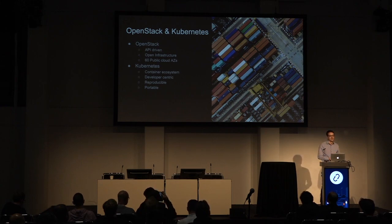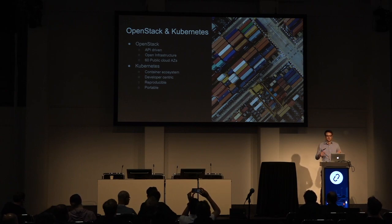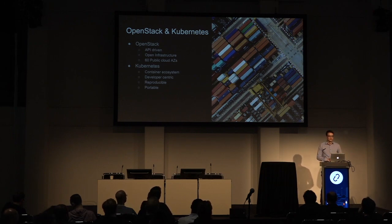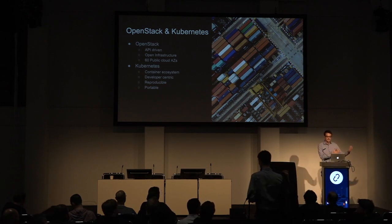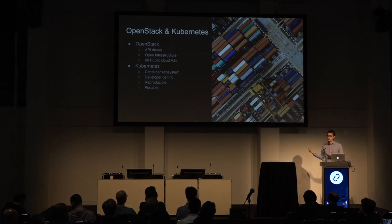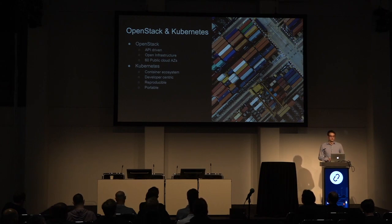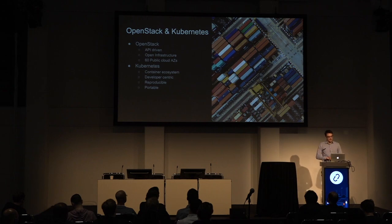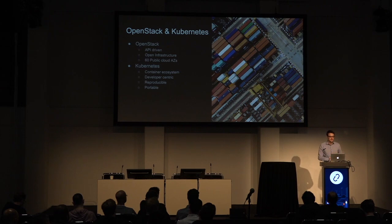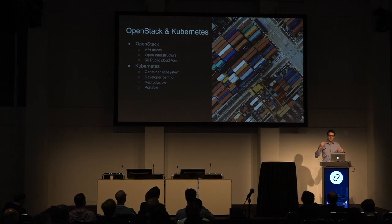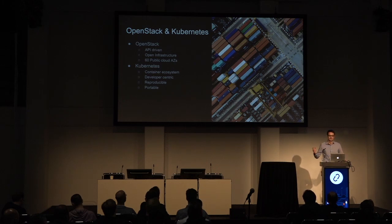OpenStack will provide the open infrastructure that allows you to not be dependent on a single organization. We are a community, so lots of organizations are involved and we're not depending on a single cloud provider — that gives flexibility around resiliency and vendor lock-in. OpenStack also has a huge marketplace of public cloud providers, around 60 availability zones listed on the OpenStack website. The Kubernetes part provides a container ecosystem, something very developer-centric. It makes application deployment portable and allows you to reproduce things fairly easily between different locations — we don't want a situation where it works in Cloud A but not in Cloud B.